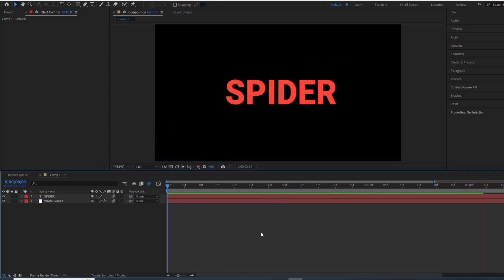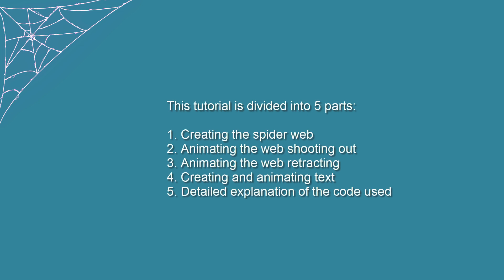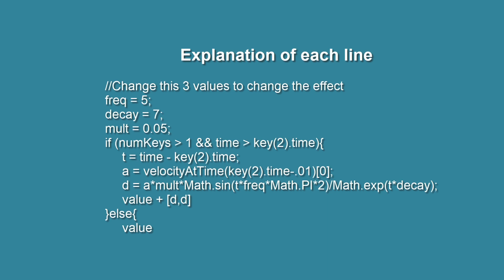Now let's delve into our magic code. When I highlight a line of code in yellow, that line is being explained. This sets the frequency of the spring oscillation — a higher value means faster oscillations. This determines how quickly the oscillation dampens or fades out — a higher value means faster decay. This is a multiplier that adjusts the amplitude or intensity of the oscillation.